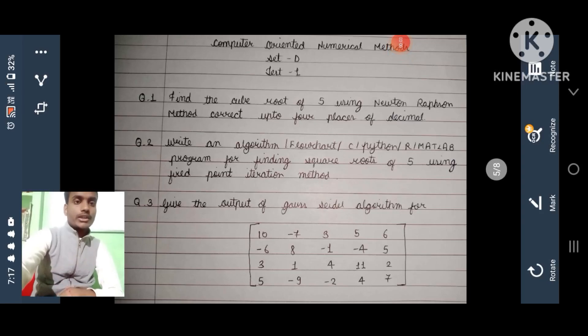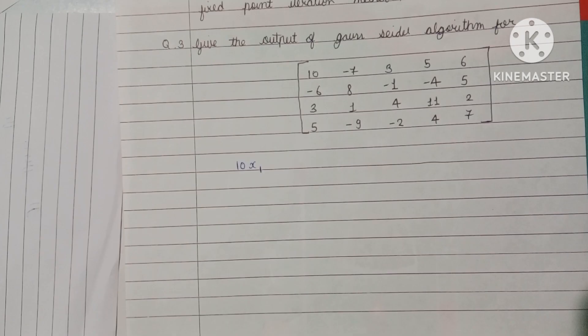Question 3 of Set D of Internal 1 is: give the output of Gauss-Seidel algorithm for the given matrix. Let's solve this. Here is a matrix and we have to solve this by Gauss-Seidel.